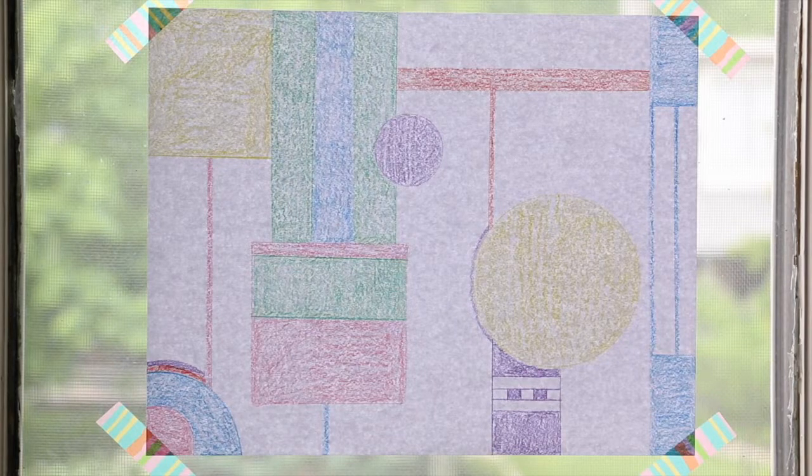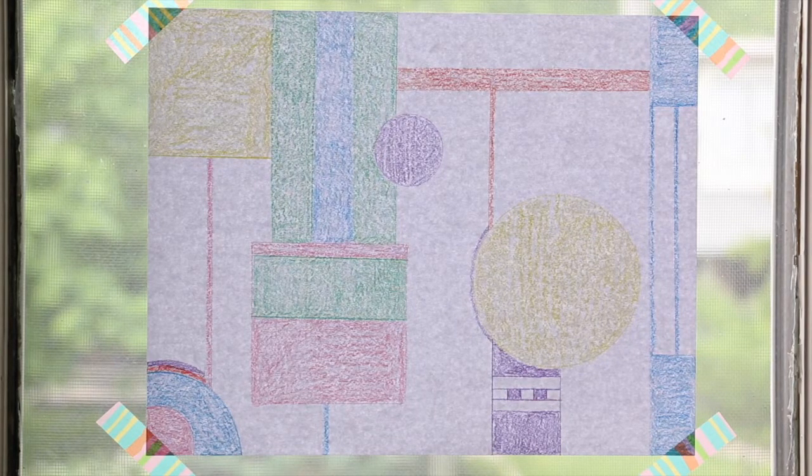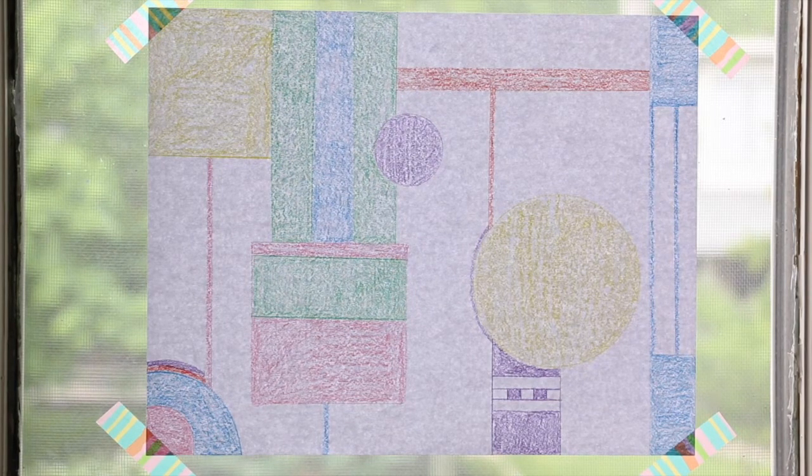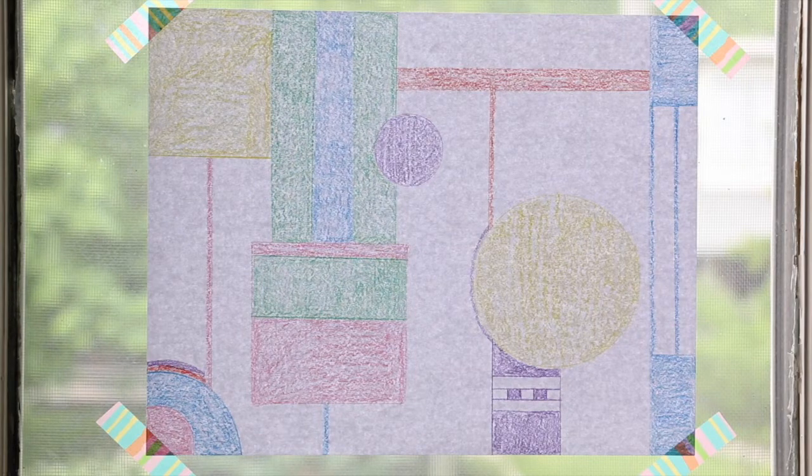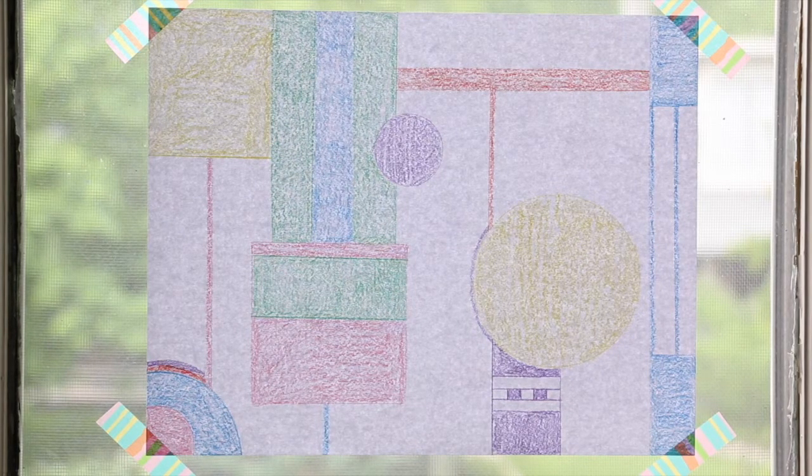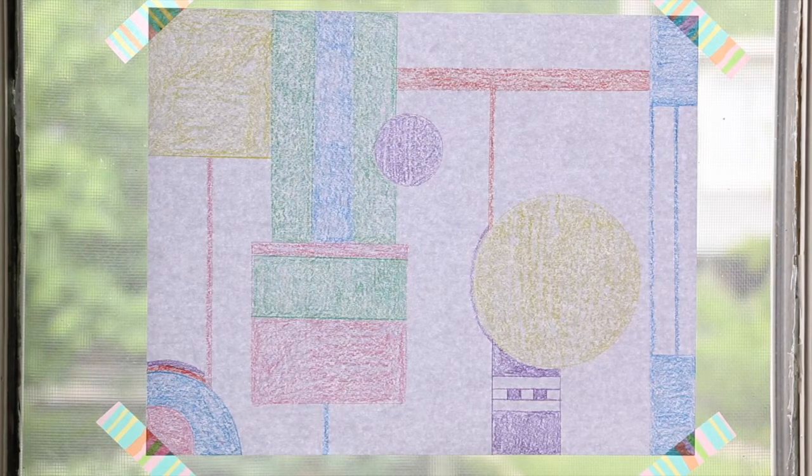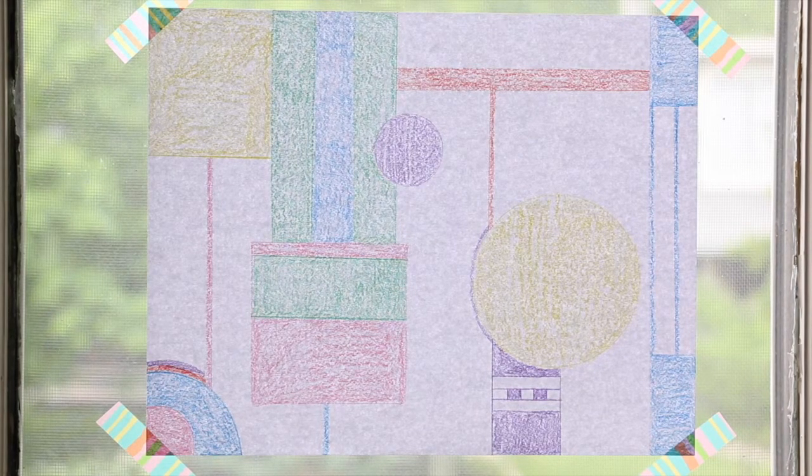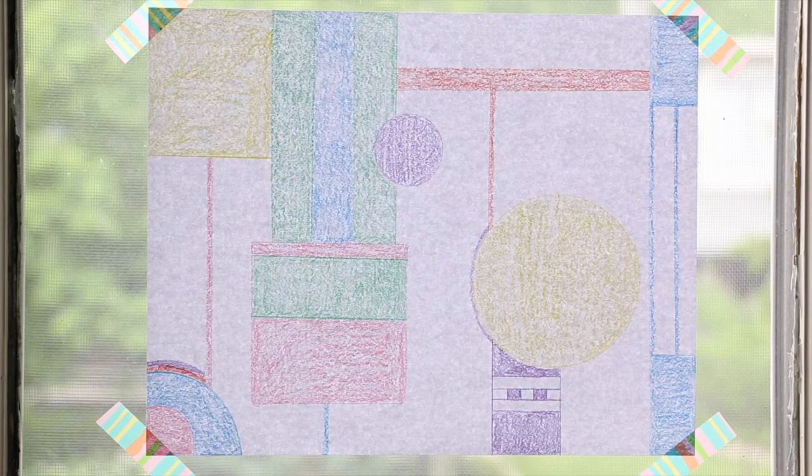Once your colored pencil design is complete, the next step is to tape it to the window. After that, you're going to get a piece of the adhesive-backed Duralar and peel it open, and you will tape that on top of the colored pencil design with the sticky side facing you. So don't let the sticky side touch the paper, it's going to be facing out.